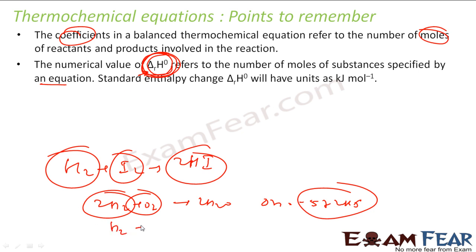If I just half this equation to H2 plus half O2 gives H2O, delta H becomes minus 286 kilojoules. This value is dependent on the number of moles of reactants and products for that particular number of moles only.